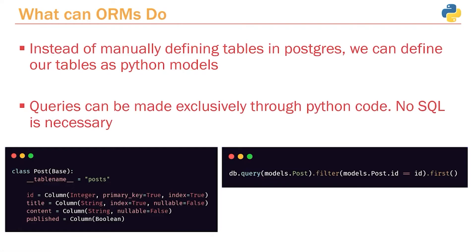One of the first things is that instead of going into pgadmin and creating the tables and all the columns ourselves, what we can do is define our tables as Python models. We can actually define what our tables in Postgres are going to look like — we give the table a name, then specify each of the columns. You'll see a lot of the common fields we already worked with: the type — so this is an integer, this is a string — we can also see if a field is nullable, and we can see that the ID is set to be a primary key. So we're using standard Python classes to define our tables so that we don't need to do it ourselves using pgadmin.